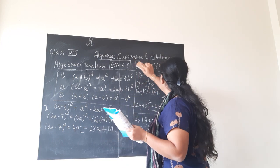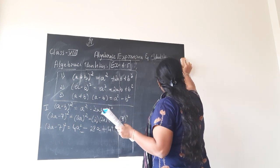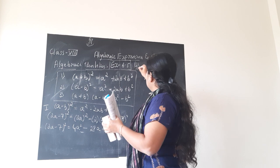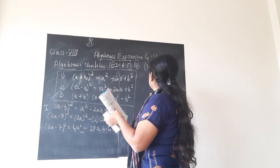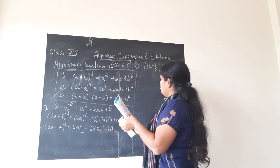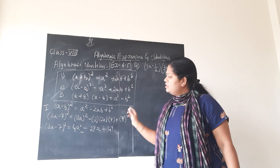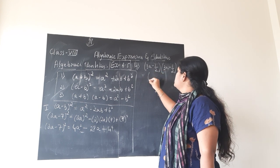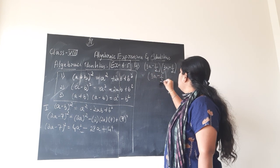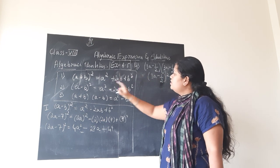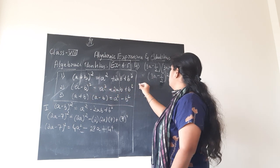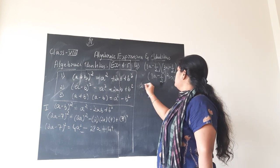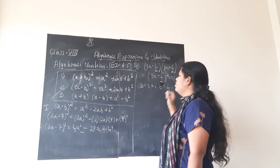Fourth question has a fraction — you need not worry, it is a very easy problem. Fourth question is 3a minus 1 by 2, into 3a minus 1 by 2. Here the same numbers are there in both brackets, so I can write it as 3a minus 1 by 2 whole square. Again, which identity does it refer to? a minus b whole square. So this is of the form a minus b whole square.